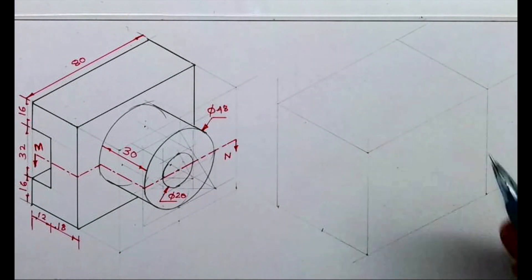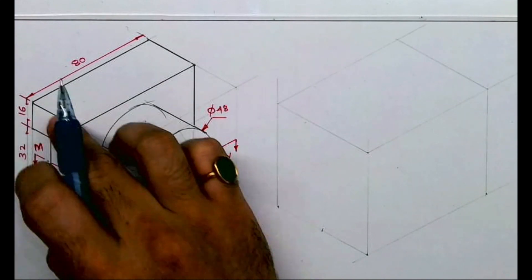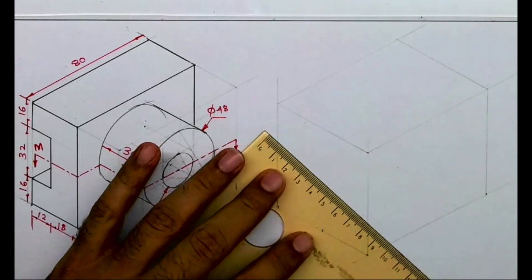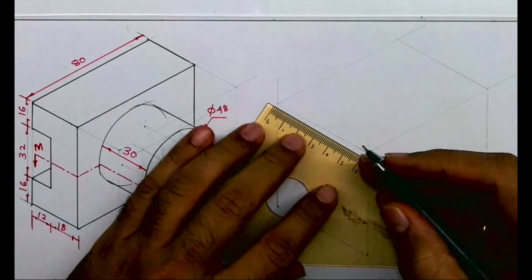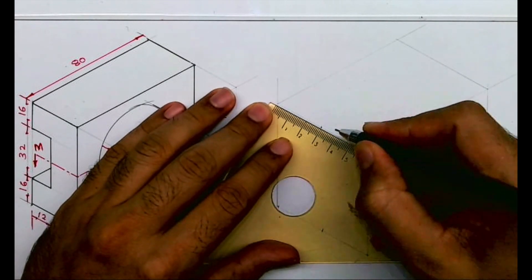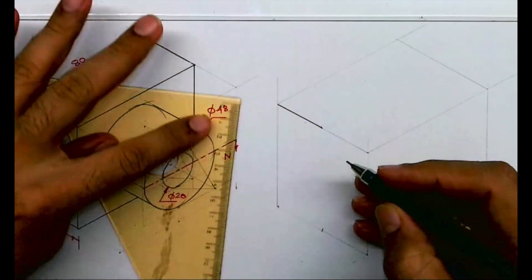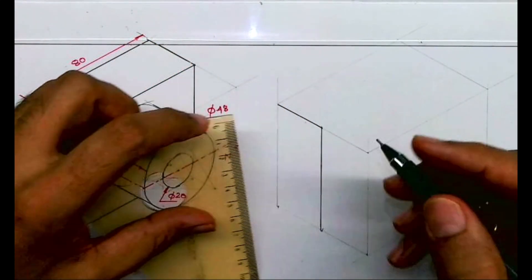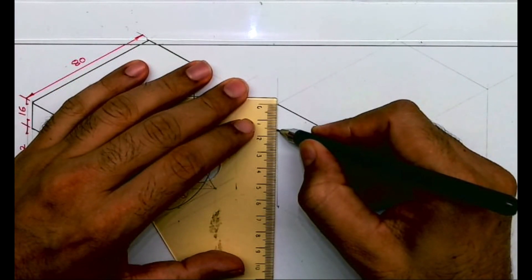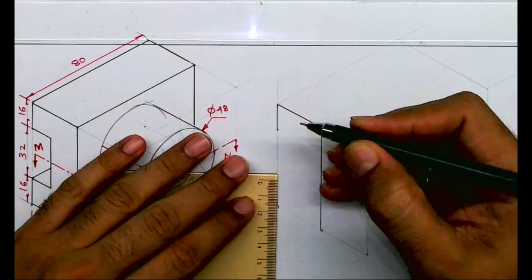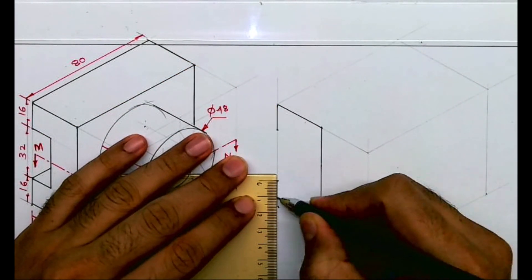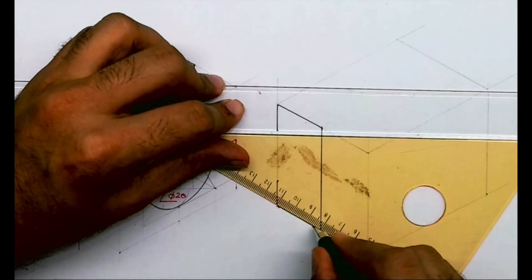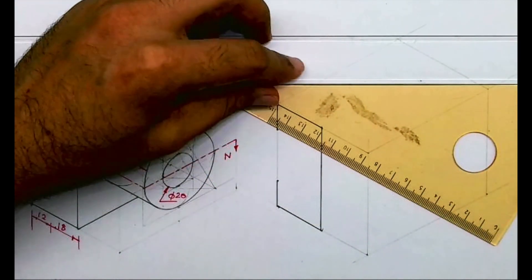So we'll draw the layout. After drawing the layout, we'll start with the circle and this C shape. First, we will draw this C shape. I will take 30 from here, then I will draw a vertical line. Then from here I have to take 16, 16, then we'll go inside by 12.